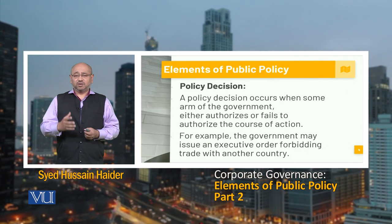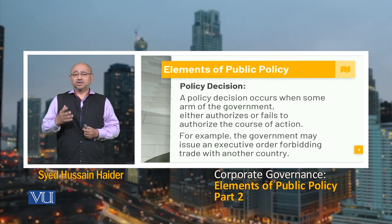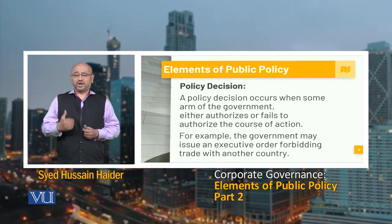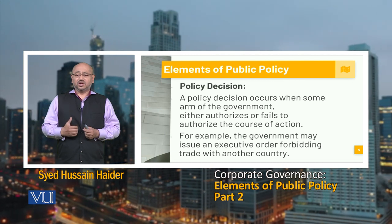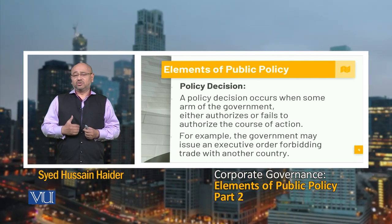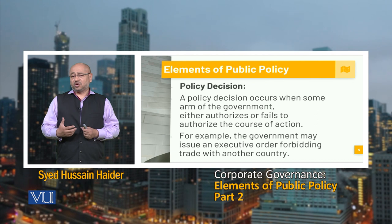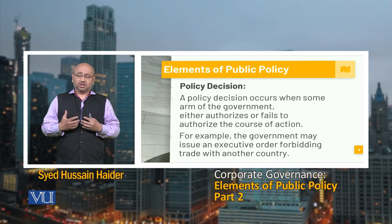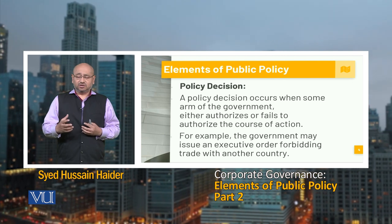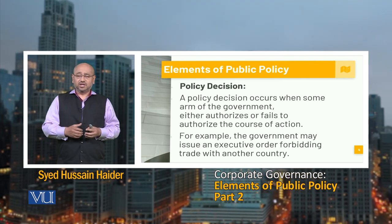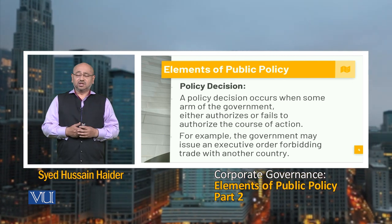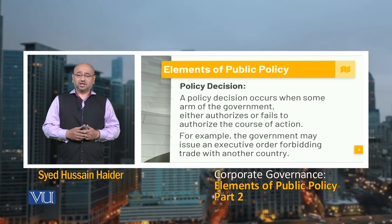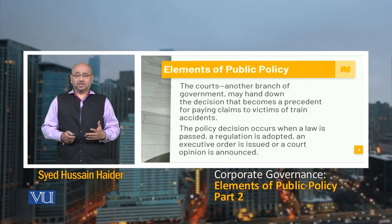A policy decision occurs when some arm of the government either authorizes or fails to authorize a course of action. For example, the government may issue an executive order forbidding trade with another country. We have seen that the government does not allow wheat to be transported from province to province — that is a policy decision. Many times the government tends to stop trade with Afghanistan, which is also a policy decision.